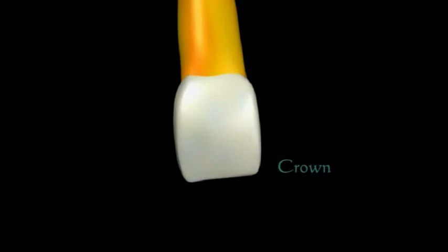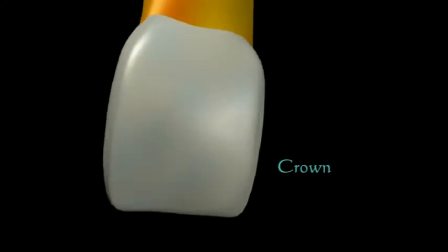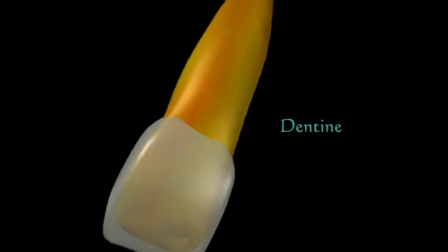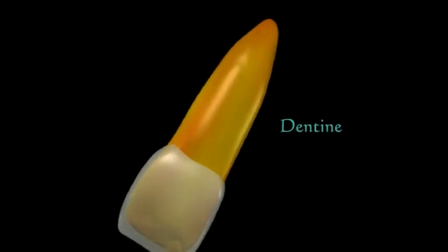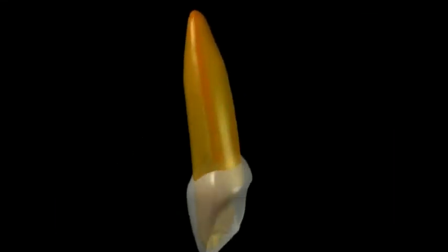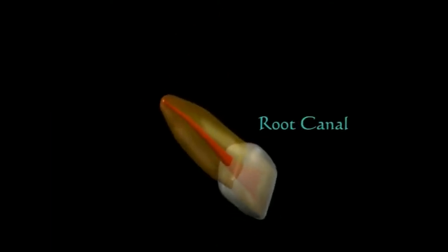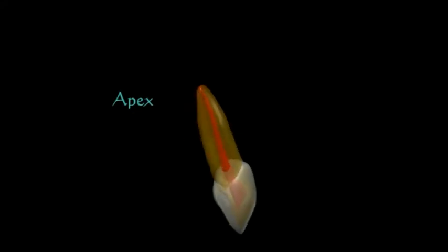The enamel is the part of the tooth that we all know as the crown, with which we eat, bite and smile. Dentine makes up the inside of the crown and the bulk of the root of the tooth. Down the center of the root is an empty space known as the root canal. This canal opens at the end of the root, called the apex, deep in the jawbone.